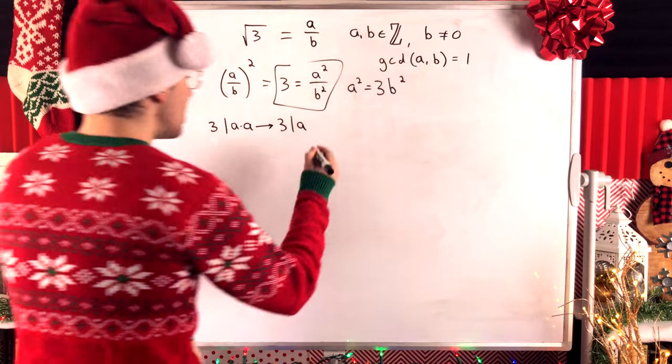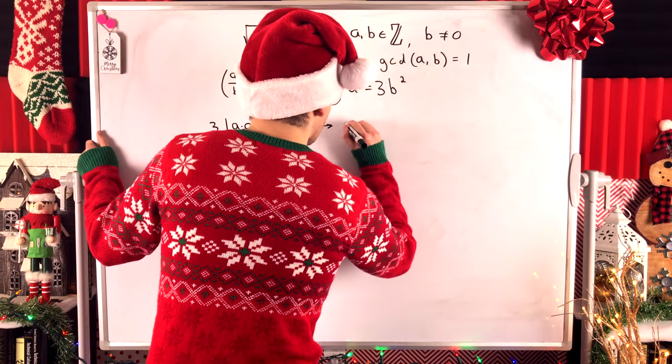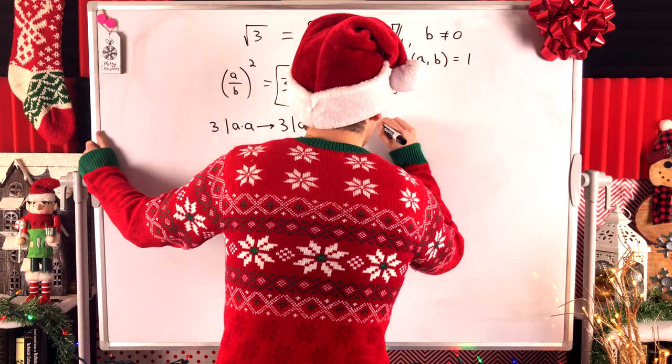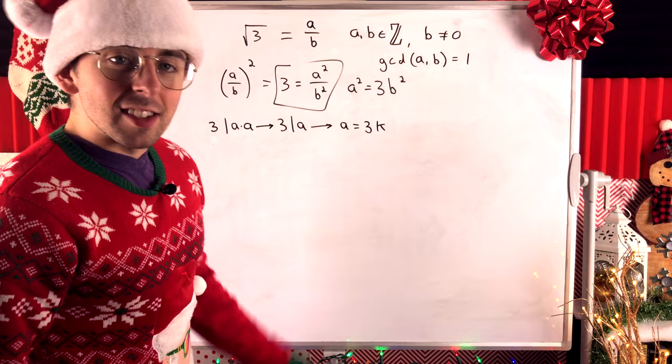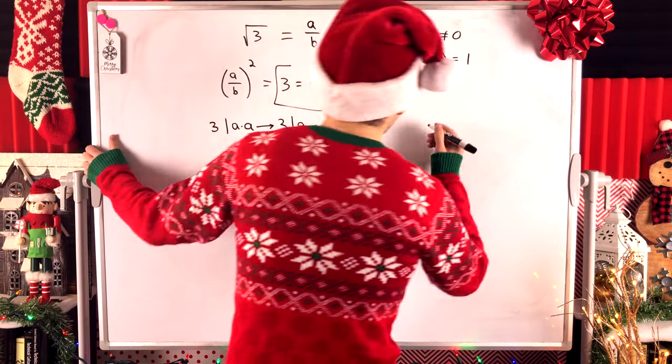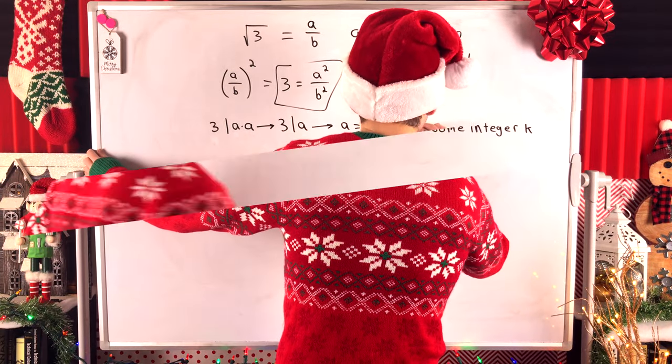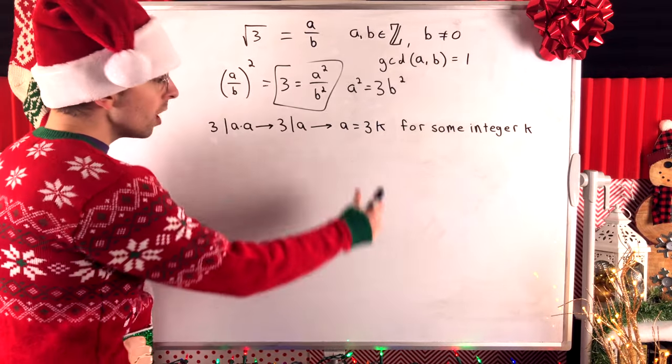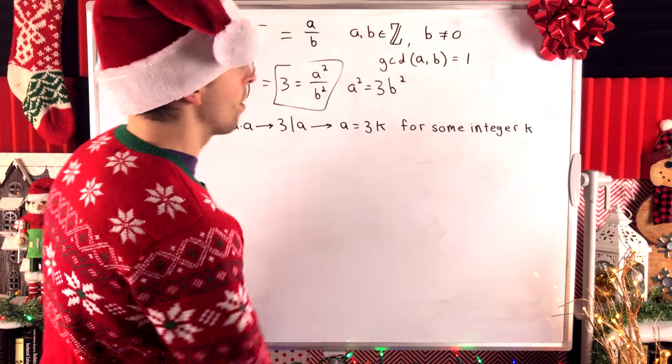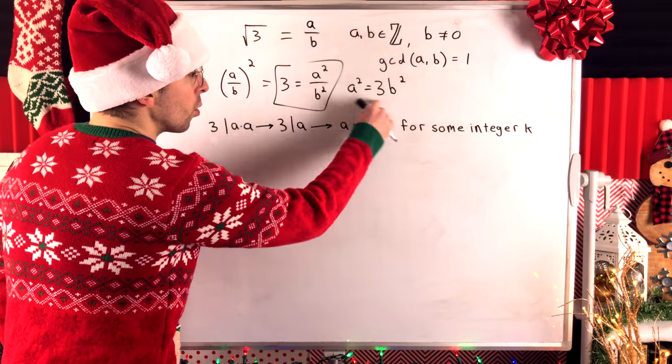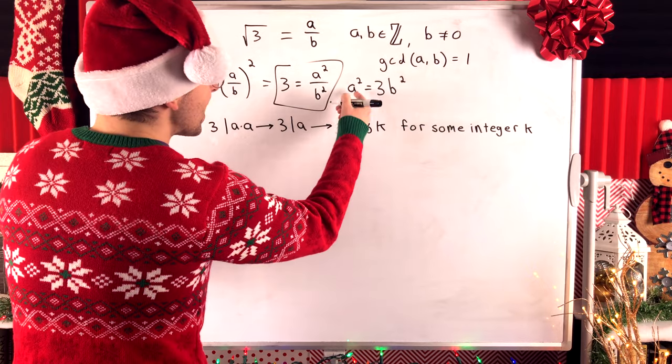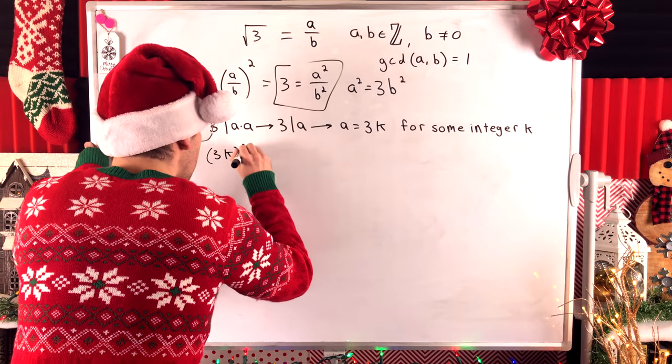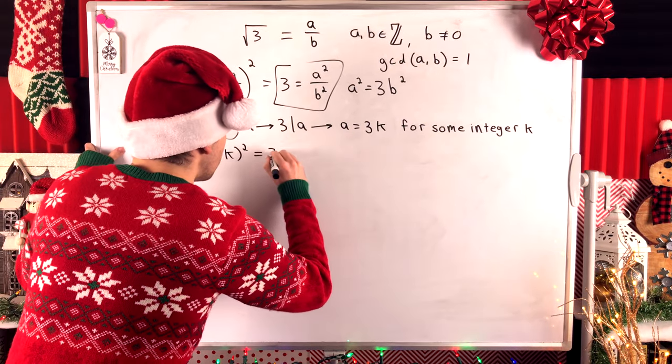So, A is divisible by 3, and we might take that and then write, by definition of divides, this means that A is an integer multiple of 3. So, we could say that A is equal to 3K for some integer K. Now, knowing that A is equal to 3K for some integer K, we could plug this expression for A, 3 times K, into this original equation we had above, which would mean 3K all squared, 3K all squared, is equal to 3B squared, 3B squared.